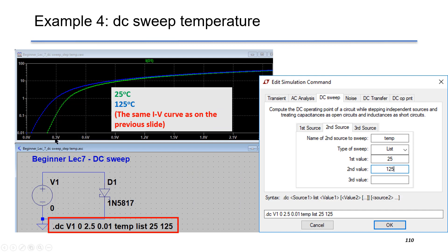This is example number 4. We put temperature in DC sweep as the second source. This is the temperature as the second source. It is also a list sweep. The type of sweep is list. The first value is 25, and the second value is 125. So it gives the same result as before, just using different methods.